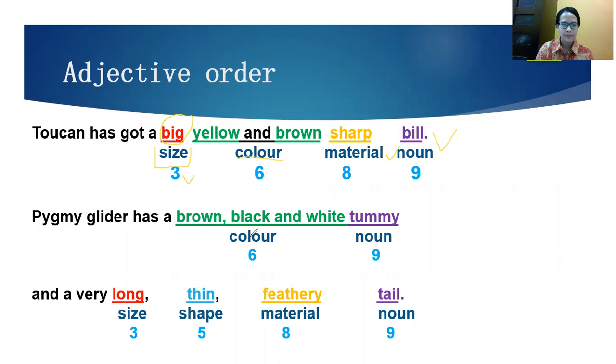Next, pygmy glider. Number six, talking about color, has a brown, black, and white tummy. So, tummy is the noun that is being described. So, it's number nine. Continue. A very long, size, shape, thin, material is feathery. And the last one, tail that is being described. So, brown, black, and white tummy, and then long, thin, feathery tail. So, that is the example of adjective order.